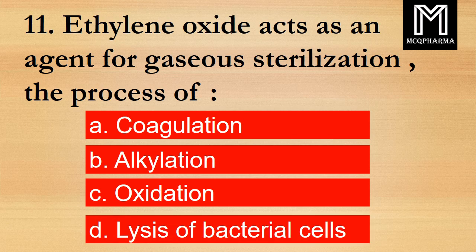Question number 11. Ethylene oxide acts as an agent for gaseous sterilization by the process of? Option A: Coagulation. B: Alkylation. C: Oxidation. D: Lysis of bacterial cells. Correct answer: Option B, Alkylation.